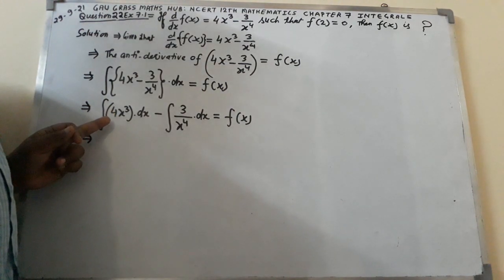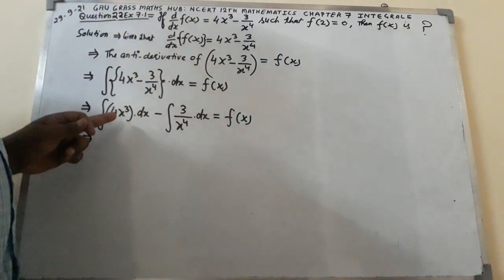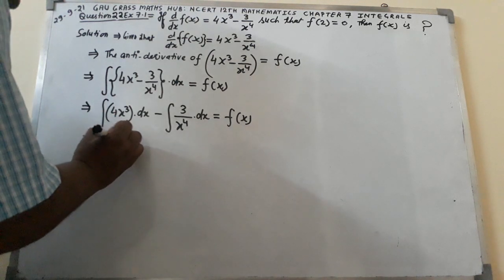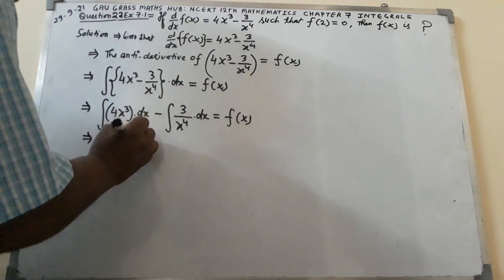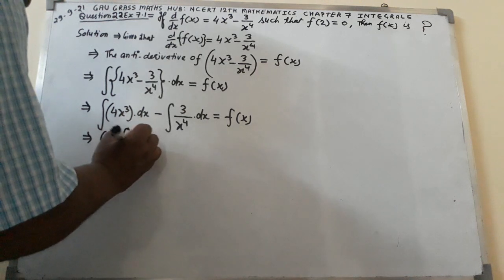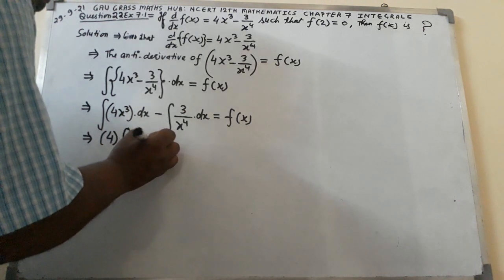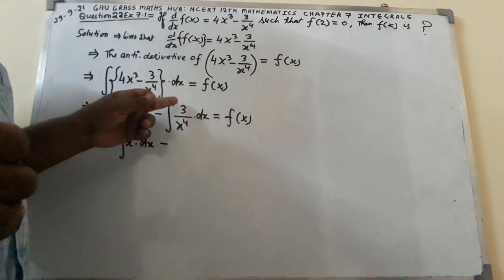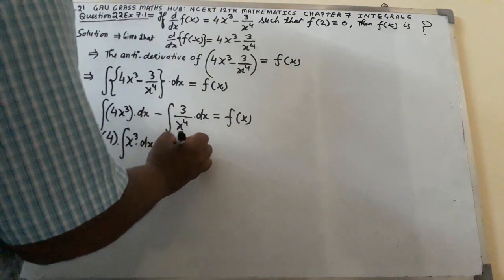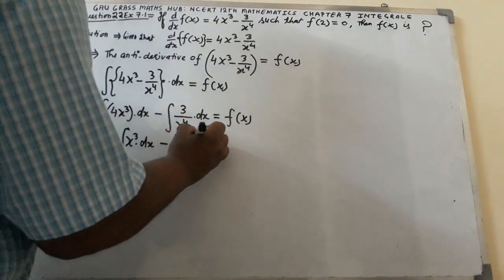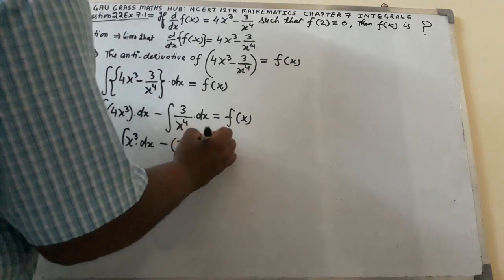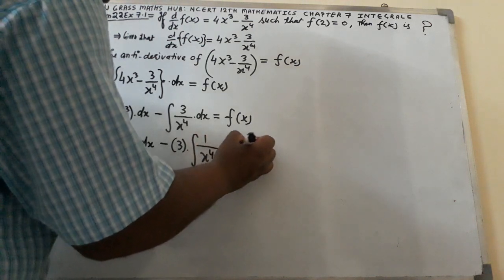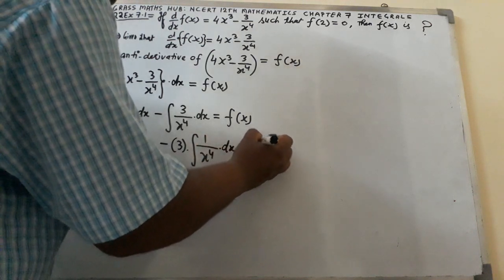Since 4 is a constant multiplied by x cubed, 4 will be pulled out: 4 times the integral of x cubed dx. Similarly, 3 is a constant and will be pulled out: minus 3 times the integral of 1 over x raised to the power 4 dx, which equals f of x.